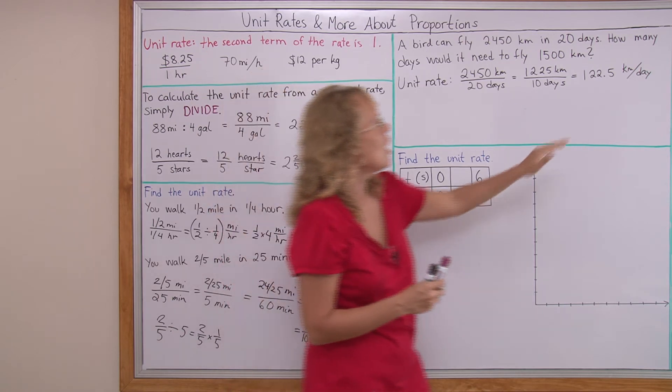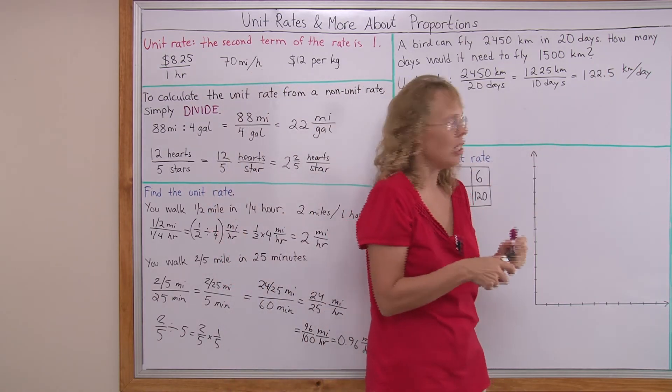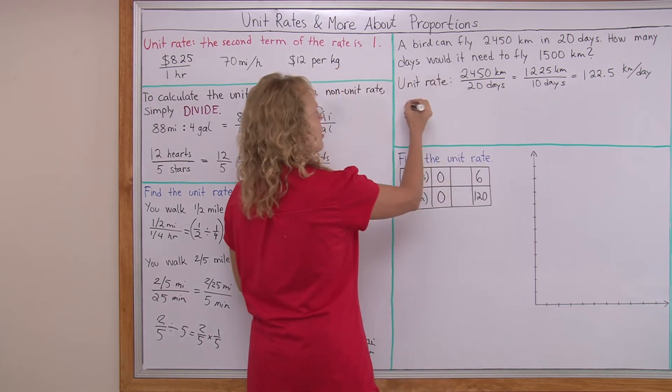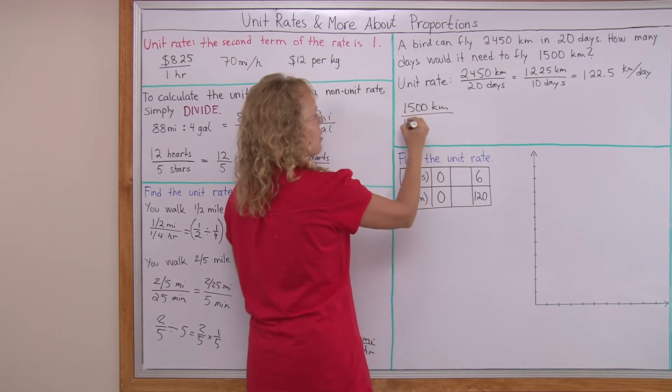And to do that, you just check how many times does this amount go into 1500. Or you divide. You use basic division. 1500 kilometers divided by that unit rate.